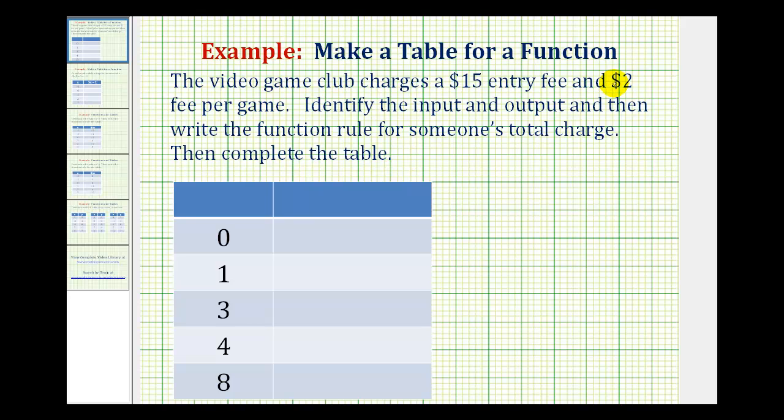Well, the total charge is affected by the number of games the person plays. So the input would be the number of games played and the output would be the total charge. And the input is often called the independent variable, and the output is often called the dependent variable.